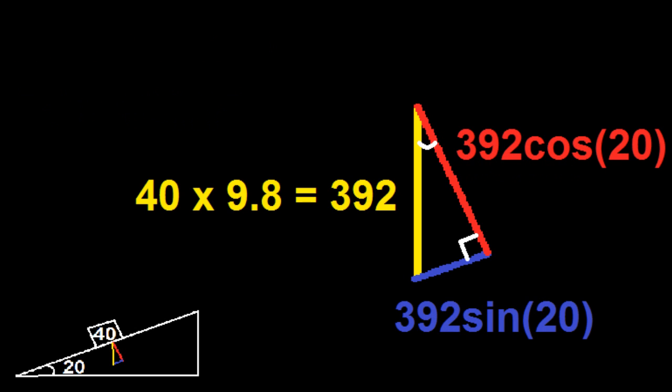Now if you wanted to, you could skip the whole step of drawing the triangle and just do mass times gravity times cosine of the angle to get your normal force, and mass times gravity times sine of the angle to get your FX.